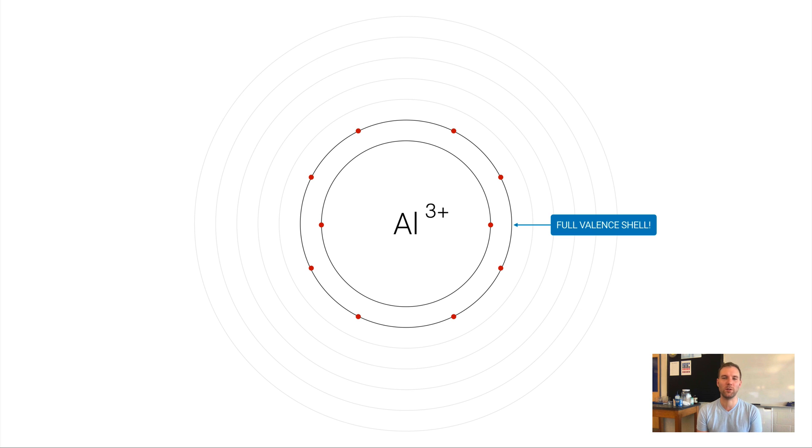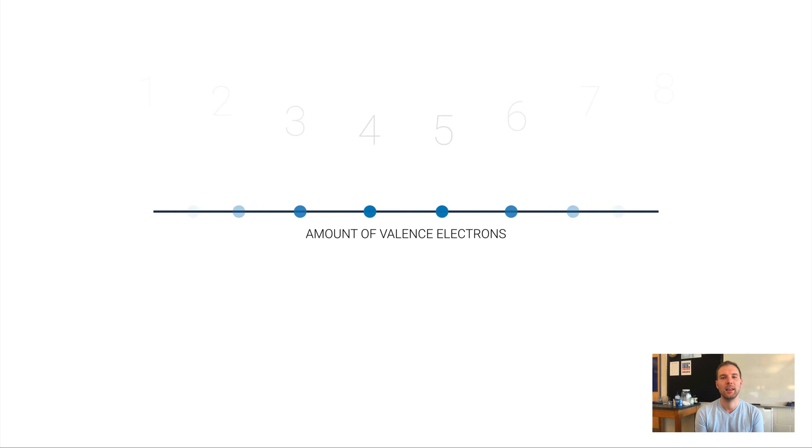Both of these elements we've looked at so far are metals. Sodium and aluminum are both metals, and it's not a surprise that they both have done similar things. They both have wanted to lose electrons to get a full valence shell.